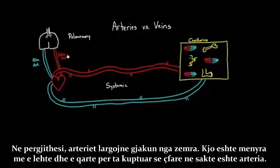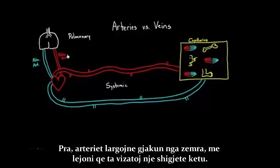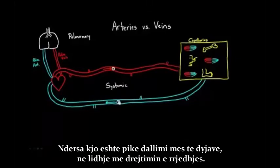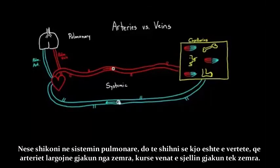In general, I think of arteries as taking blood away from the heart. That's probably the easiest and most clear way of understanding what an artery is. Arteries take blood away from the heart. Veins bring blood back. This becomes our first point of difference between the two — the direction of flow. Even looking at the pulmonary system, that remains true: the arteries take blood away and the vein brings the blood back.